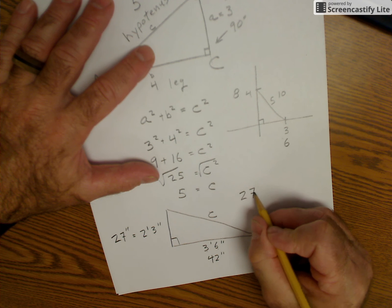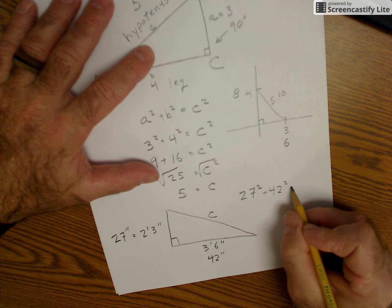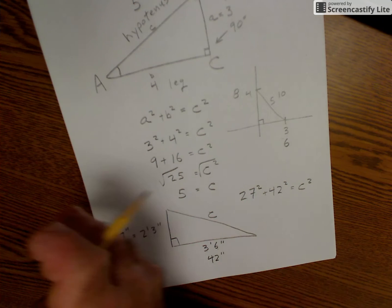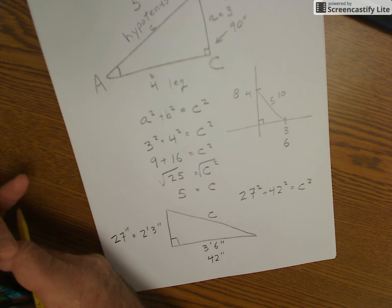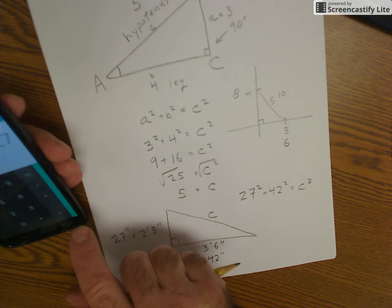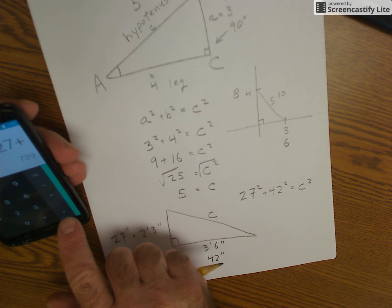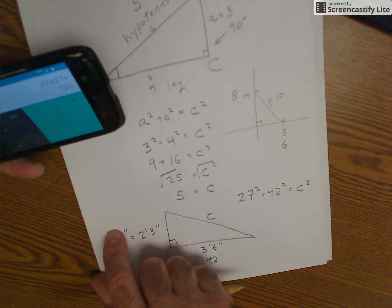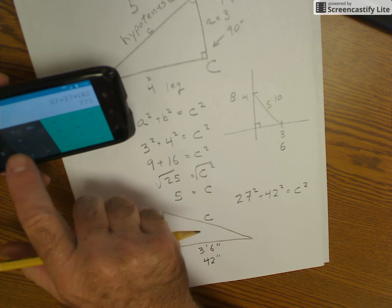Now I have to use a calculator. So let me do that. So on my calculator, on my phone, I'm going to go 27 times 27 plus, actually I've got to turn it this way to get those other functions, 42 times 42.